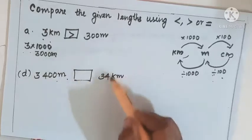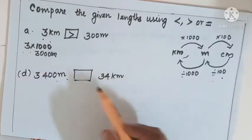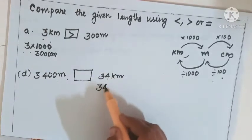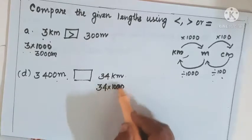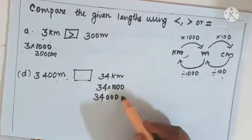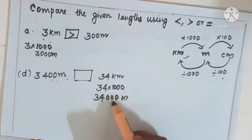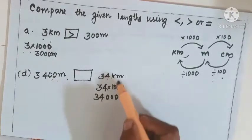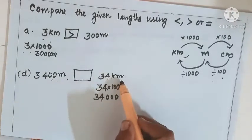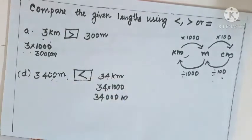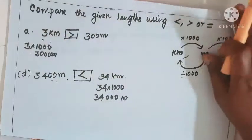Likewise, compare 3400 meter with 34 kilometers. It is already in meters. Convert 34 kilometers into meters: 34 into thousand equals 34000 meters. So which is greater? 34 kilometers is greater. You put the symbol on this side. Likewise we can do other comparisons.